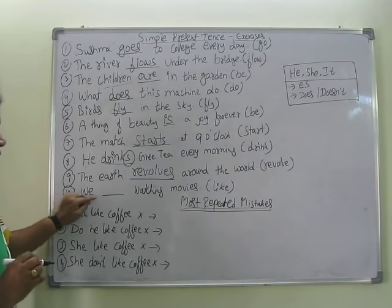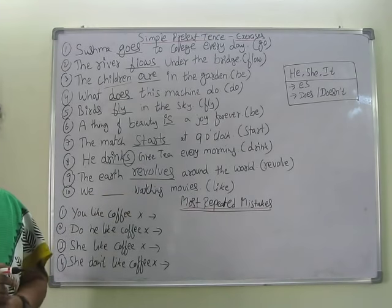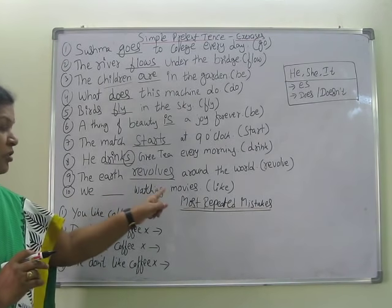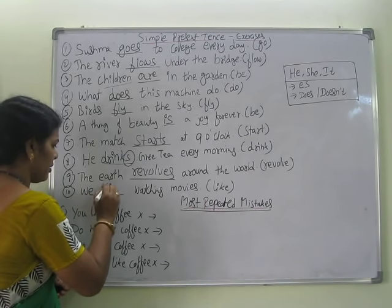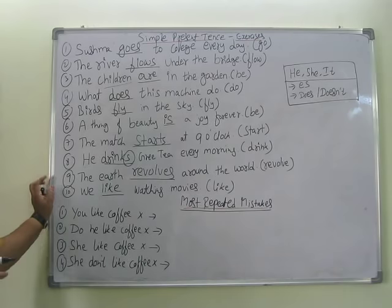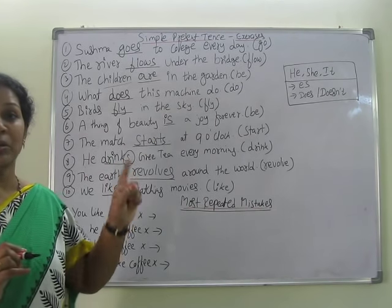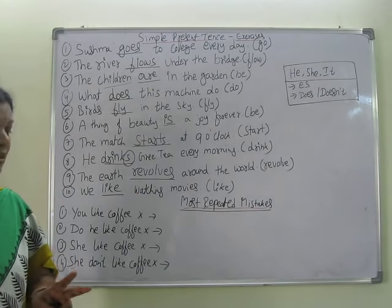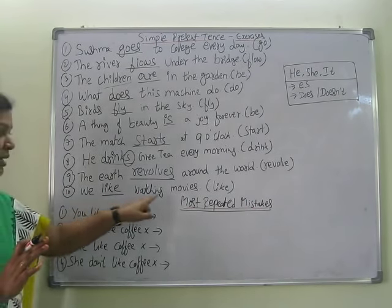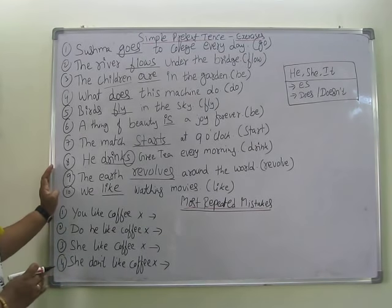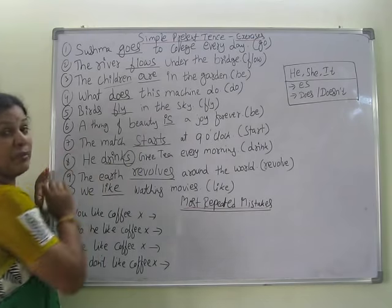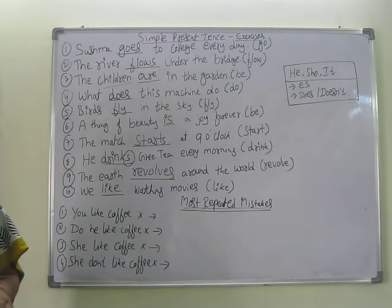We ___ watching movies. 'Like' is given. We like watching movies — simple, same form. When do we add 's'? Only when it's he, she, or it. Otherwise it is not required; keep it the same. We like watching movies. You can use proper words and change them, or keep them as they are — just like 'fly', same as it is.